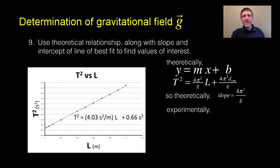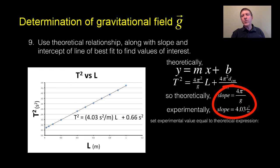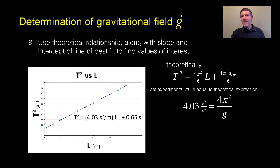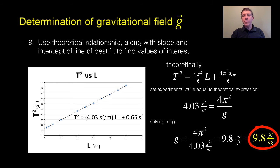Now, experimentally, what did I get for my slope? I got the slope is equal to 4.03 second squared per meter. So what I can do with this is I can actually find my value of g. So all I got to do is set the experimental value equal to the theoretical expression. In other words, just set 4.03 second squared per meter—that's the slope I got for my experimental graph—I set that equal to what it should be theoretically, according to my theoretical equation, 4π²/g. And I simply solve for g. And sure enough, when I do that, I end up getting 9.8 meters per second squared.